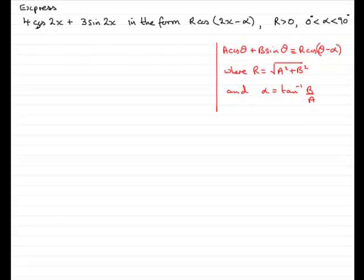So how does this fit into what we're doing here? Well, we've got this kind of expression, only the theta is the 2x. So, what we can do then is start off by saying that 4 cos 2x plus 3 sine 2x is identical to a cos 2x plus b sine 2x.